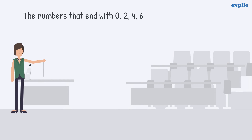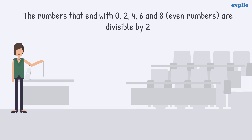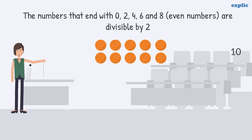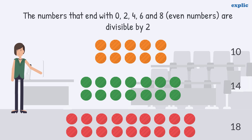The numbers that end with 0, 2, 4, 6, and 8 are divisible by 2. That means all even numbers are divisible by 2. For example, 10, 14, and 18.